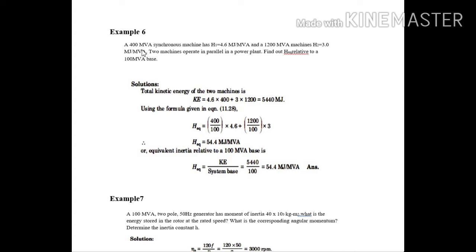You can read this. This 400 MVA synchronous machine has inertia constant, it is given. And the base is also given. Similarly, for second machine, inertia constant is given. The two machines are operating in parallel. Find out its equivalence. The similar problem as just we have seen.